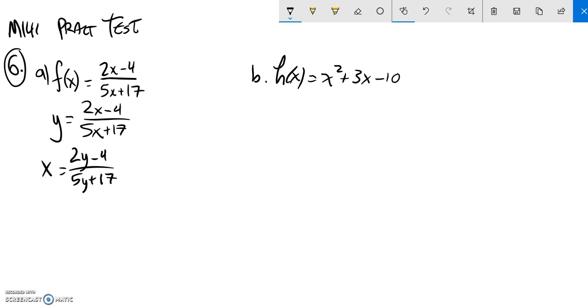And so now my work from here is to get y all alone. So I'm going to multiply both sides by 5y plus 17. Get it out of the denominator. Over on the right-hand side, I'm left with this. Over here, I'm going to distribute that x. So I have 5xy plus 17x.